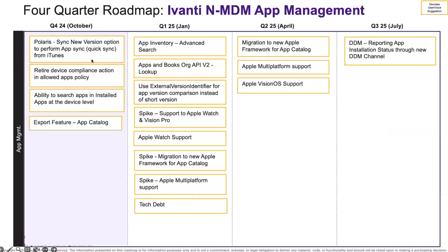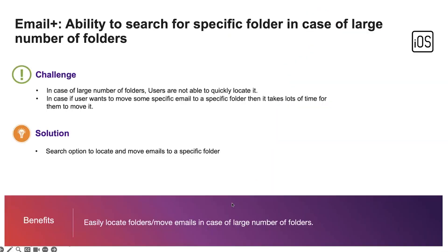That's what we're bringing in Q4 for app management. In productivity apps, on the Email Plus side, we are coming up with a feature which will allow you to search for a specific folder in the case of a large number of folders. The challenge is that if you have many folders and would like to locate a specific one —